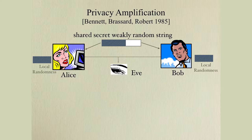I'm going to start with this small cryptography problem: privacy amplification, which was first introduced by Bennett, Brassard, and Robert in their 1985 paper. We have Alice and Bob, who have a communication channel, and there is an adversary Eve who is watching this channel.